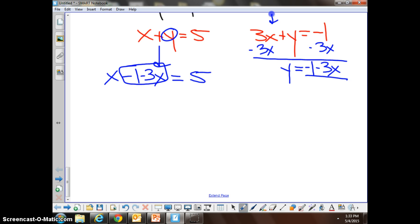Negative 3x and x look like like terms to me. Negative 2x minus 1 equals 5. Keep going. Add 1. So negative 2x equals 6. Beautiful.